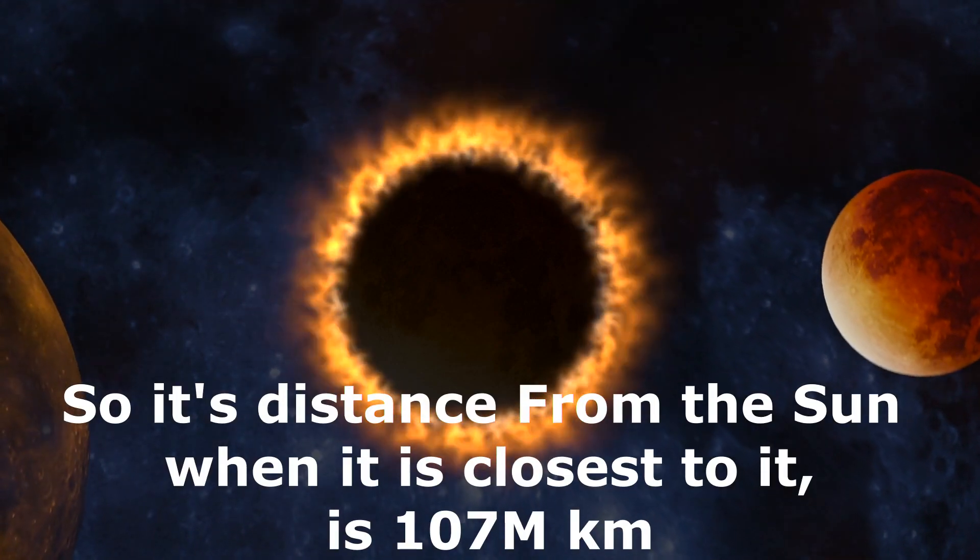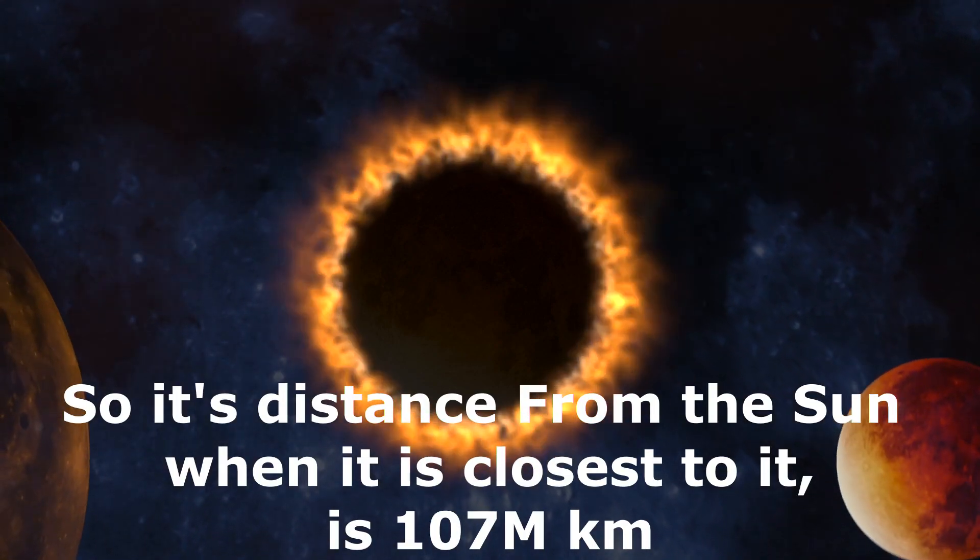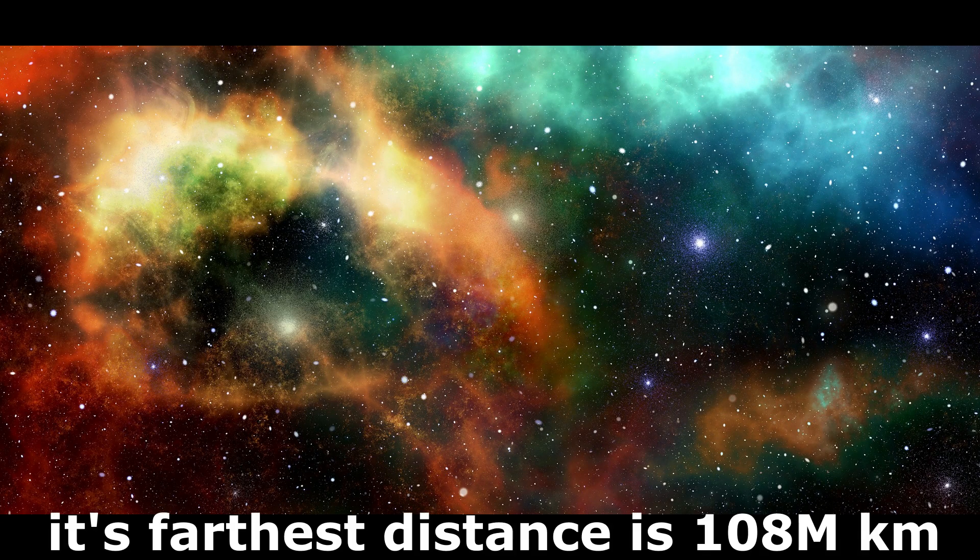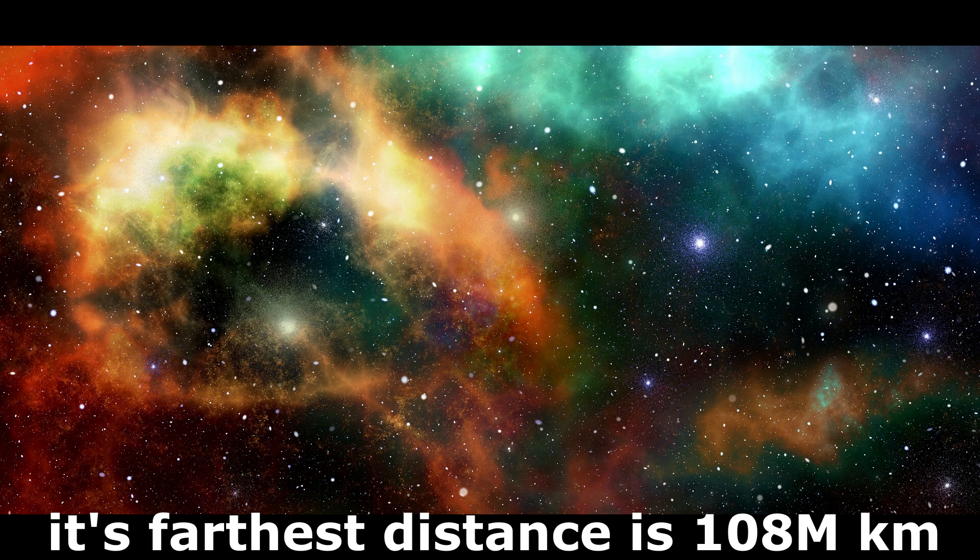The orbit of Venus planet is slightly elliptical. So its distance from the Sun when it is closest to it is 107 million kilometers. And when it is farthest, its distance is 108 million kilometers.